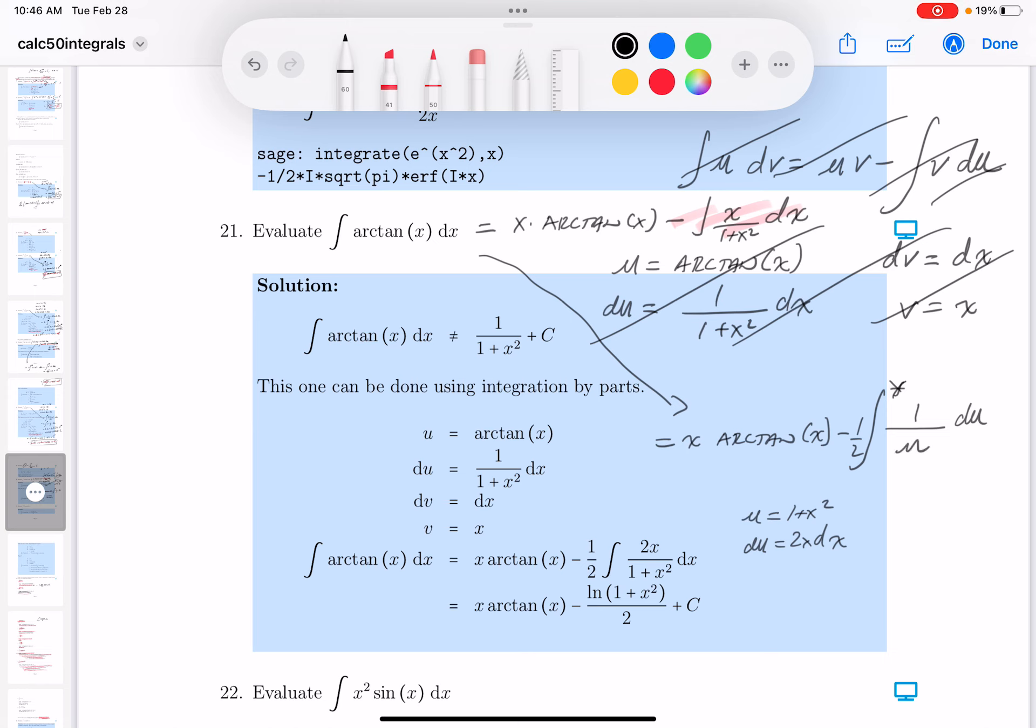All right, so let's do this now. Put this over here, it's going to be x arc tan of x minus one half natural log of the absolute value of u. What's u? It's 1 plus x squared plus some constant.